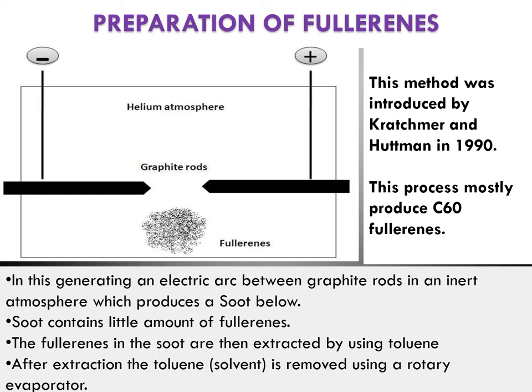Fullerene preparation was developed by Krätschmer and Huffman in 1990. Similar to the arc discharge method, two graphite rods act as anode and cathode subjected to high voltage. When high voltage is applied, a soot forms that contains a very small amount of fullerenes — especially C60. The soot is then subjected to an extraction process, mixed with toluene or organic solvents. The extract containing fullerenes has excess solvent evaporated using rotary evaporators, and finally fullerenes are obtained. However, this process produces very low yield.